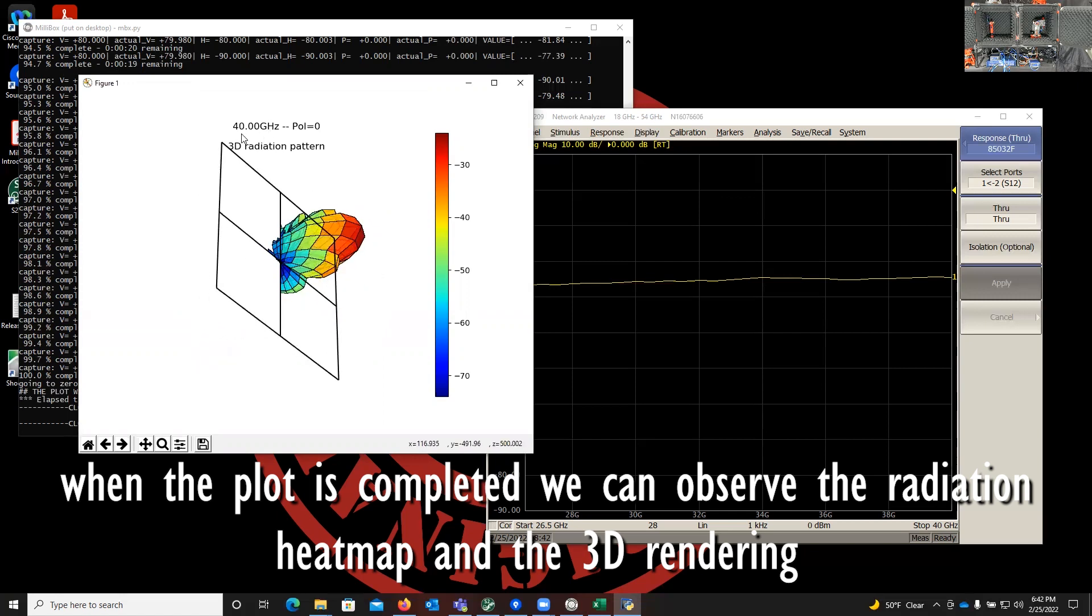So that's just for 40 gigahertz, but as I just told you, we have similar radiation patterns for all the frequencies in the trace for every point of the VNA trace.